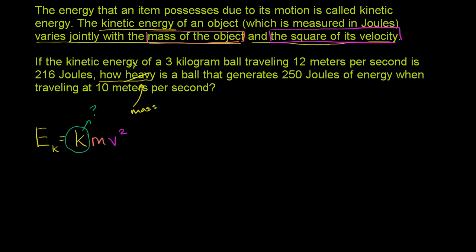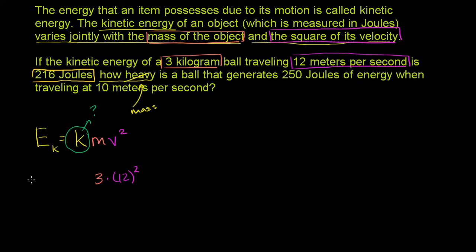They tell us the kinetic energy of a 3-kilogram ball traveling 12 meters per second is 216 joules. So our mass is 3 kilograms, our velocity is 12 meters per second, so we have k times 3 times 12 squared. And the energy — 216 joules — goes on the left side. We don't yet know what the constant k is.